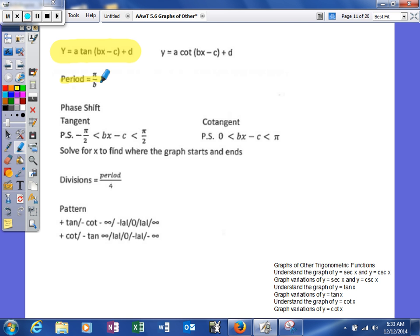So when we look at the tangent, what we're actually going to determine is the time it takes for it to repeat its cycle. It's going to be π instead of 2π. So tangent and cotangent are both π over b.